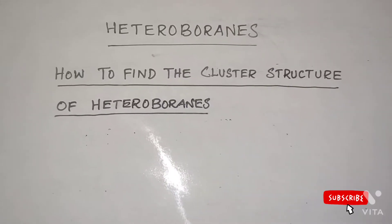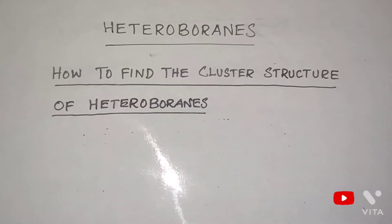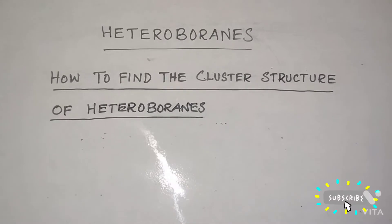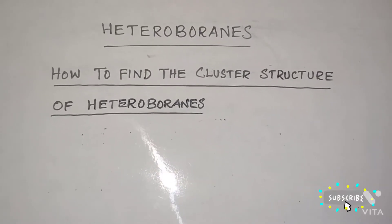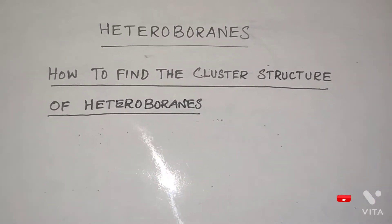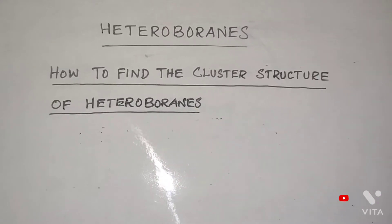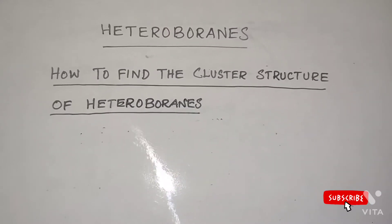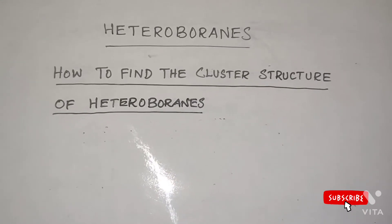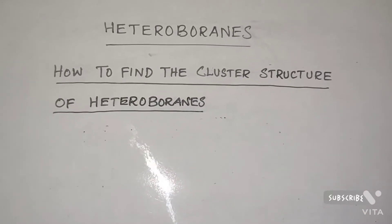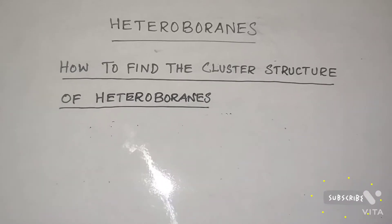Hey friends, today we are going to see heteroborane compounds of group 15 and 16 elements. Group 14 elements were already discussed in a previous video. Carbon is isoelectronic with BH unit. Therefore, group 14 elements — carbon, silicon, germanium, and tin — are isoelectronic with the BH unit.